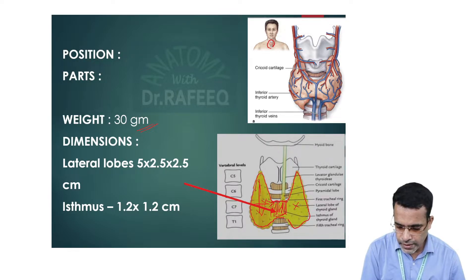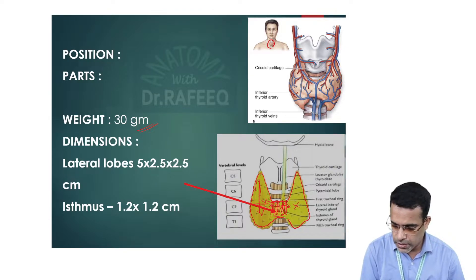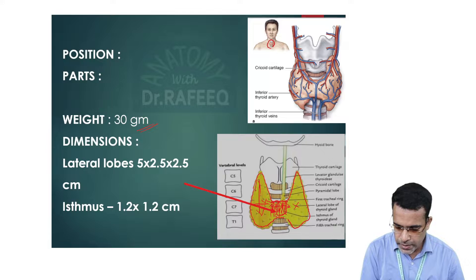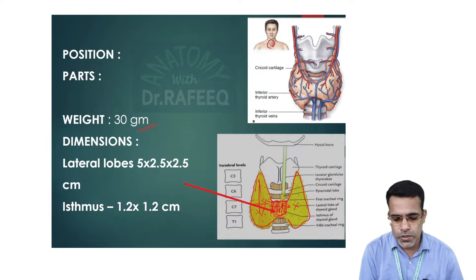The isthmus measures around 1.2 centimeters in its transverse diameter, and its vertical diameter is equally 1.2 centimeters.